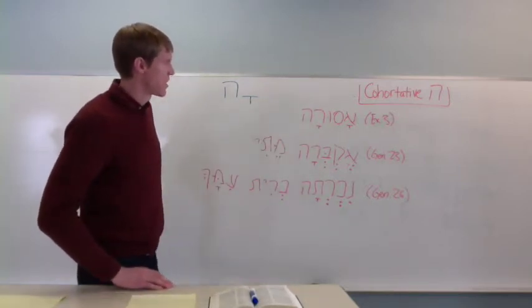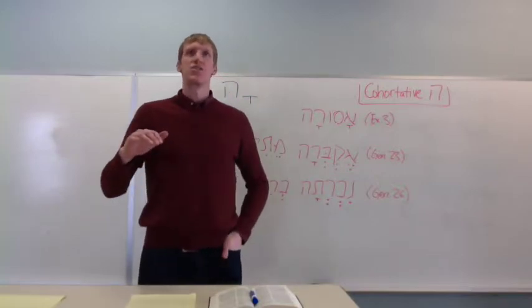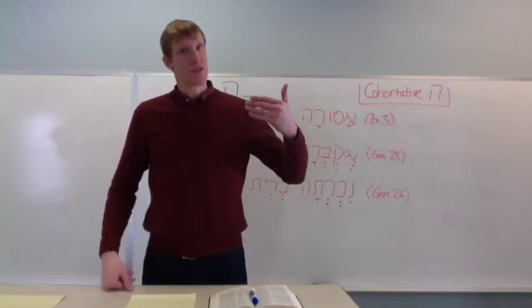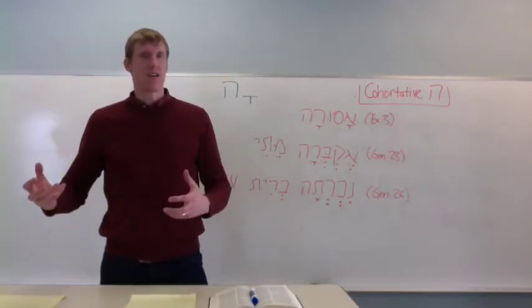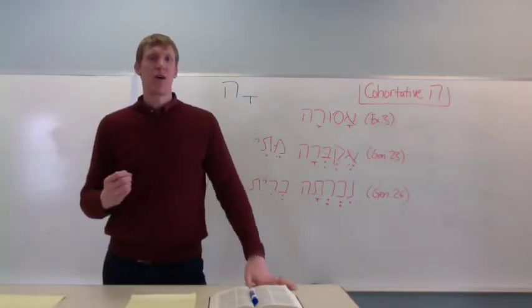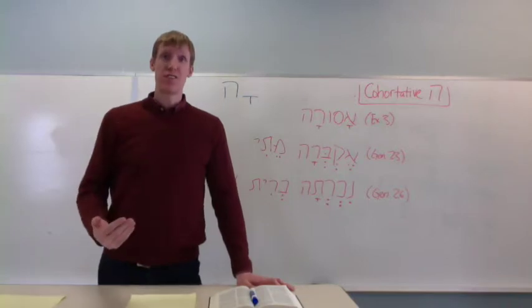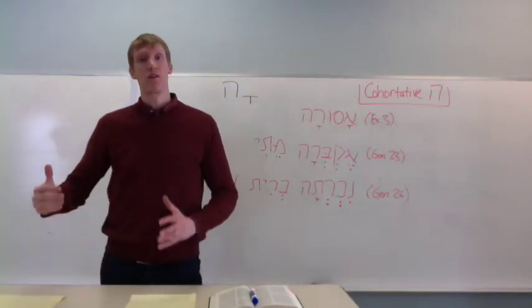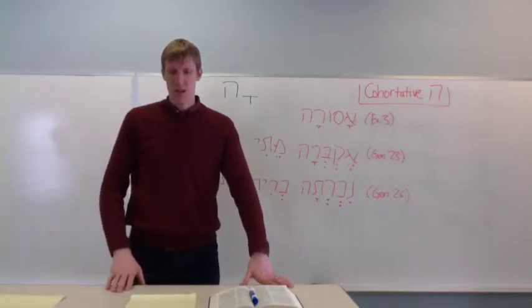I've written down three examples here. The first one illustrates the interpretive challenge that's sometimes posed by the cohortative. Because, though it's generally translated with let us or let me, it can also, instead of adding the subjunctive in that it's articulating a desire or a wish, it can express more forceful emotion in expressing certainty. So, I will surely do this or we will indeed or we will certainly do something or be something.